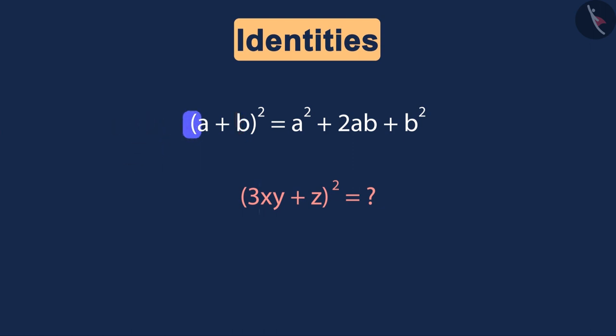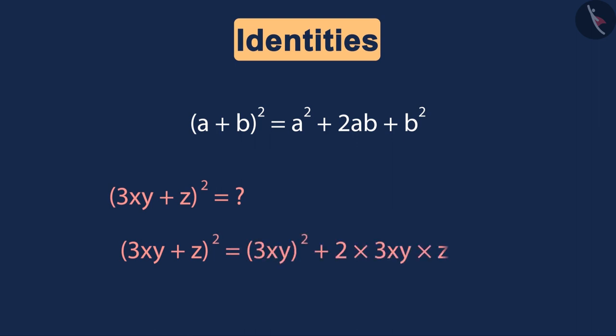So in the right hand side we will get (3xy)² + 2 × 3xy × z + z². After simplification we will get 9x²y² + 6xyz + z².